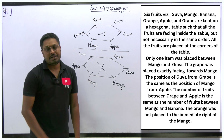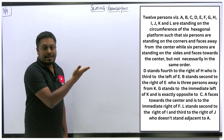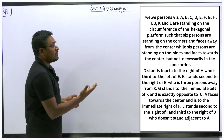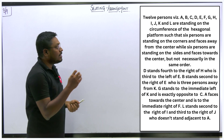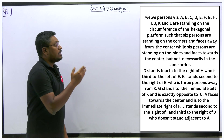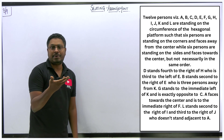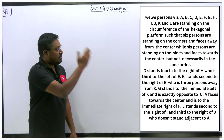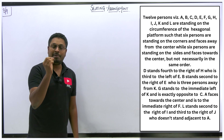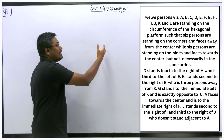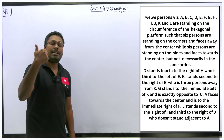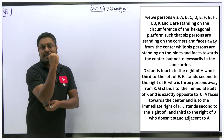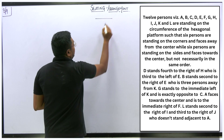Now let me move on to set number 9, seating arrangement — also a hexagonal shape. There are 12 persons A to L standing on the circumference of a hexagonal platform, such that 6 persons are standing at the corners facing outside, and the persons standing on the sides are facing the center. This is a memory-based question from a mains exam 3 years back. In an exact hexagonal diagram with 12 persons, every person faces another person directly opposite.